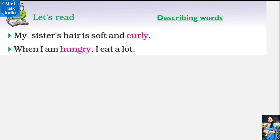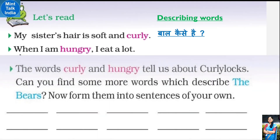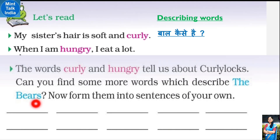Ab isi tarike ke bahut saare describing words aapko yahaan likhne hain. The words 'curly' and 'hungry' tell us about Curly Locks - Curly Locks kaisi thi, uske baare mein bataaya hai. Can you find some more words which describe the bears? Ab aap kuch aur words likhiye jo bhaalu ko describe karte hoon - bhaalu kaisa hota hai, unke baare mein aapko words likhne hain, aur un words se sentences bhi banana hain.